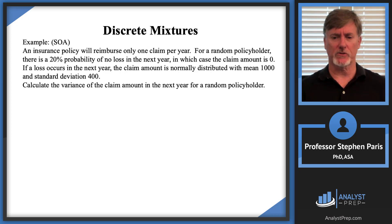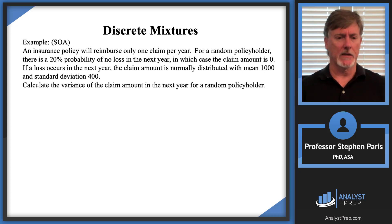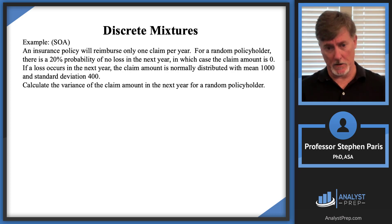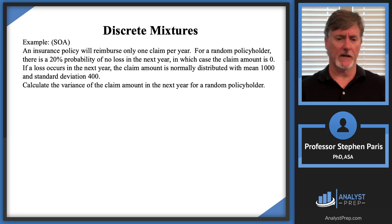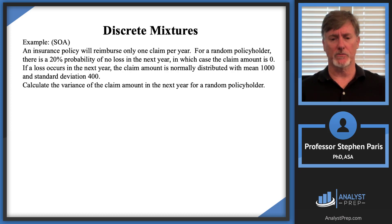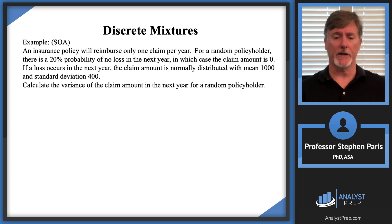Let's look at an example. I want to illustrate it by reminding you of some mixtures that we had before. There was a discrete mixture problem where an insurance policy reimburses only one claim per year. Random policyholders: 20% probability of no loss in the next year, meaning the claim amount is zero. 80% probability that there is a loss. When there is a loss, the claim amount is a uniform distribution with a mean of 1,000 and a standard deviation of 100.